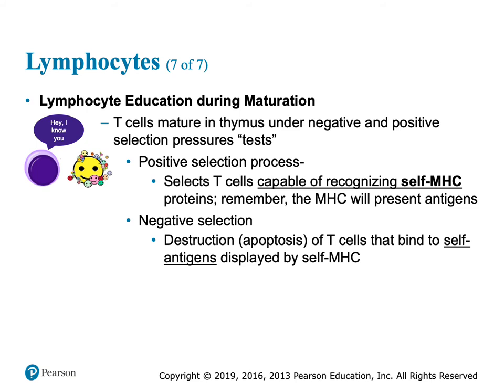T cells are going to mature in the thymus, and not only do they have to learn how to recognize a bad guy and kill it, or recognize a good guy and not kill it — they even have testing. And if they flop their testing, they just get destroyed.